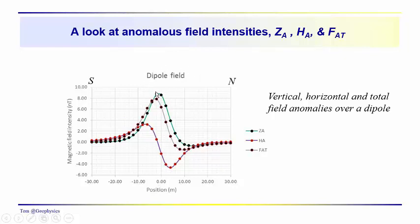This would be a relatively compact object, something like a DRAM or an underground storage tank, significantly far away so that we can effectively represent it by a dipole field.